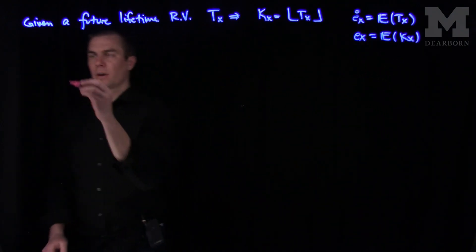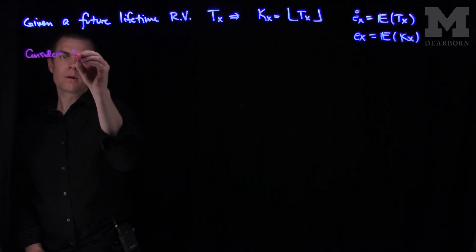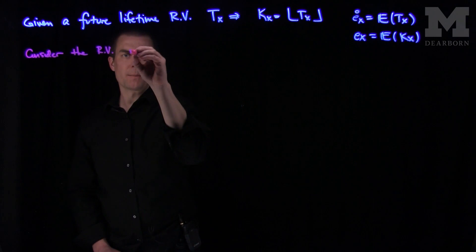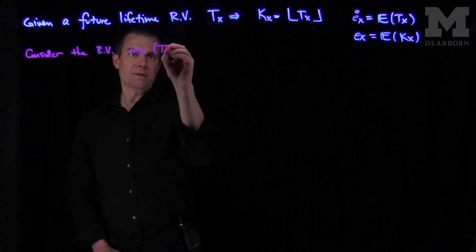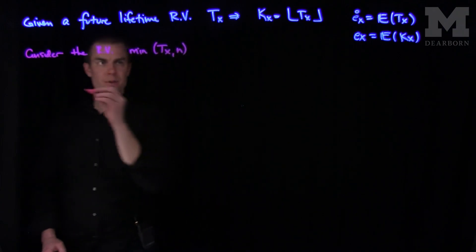And so now we can modify this, we can look at a capped lifetime, we can consider the random variable which is the minimum of tx and n. And if I compute the expected value of this, we're going to denote it.